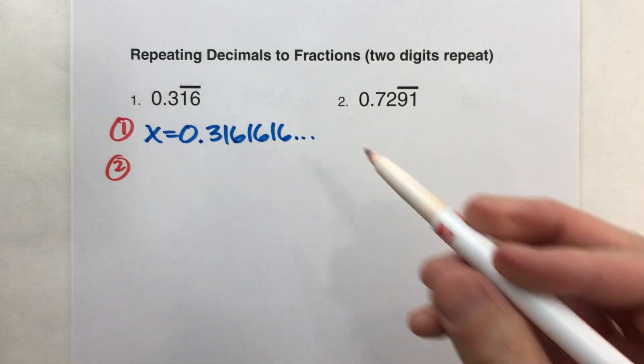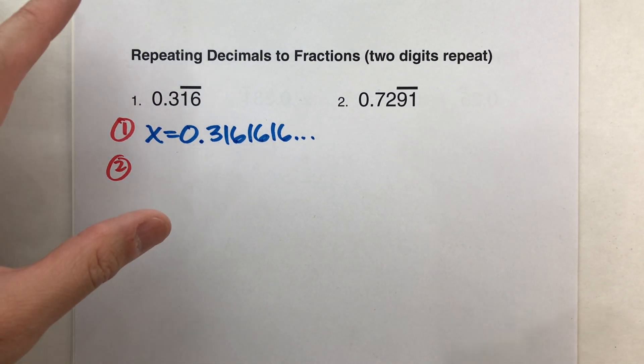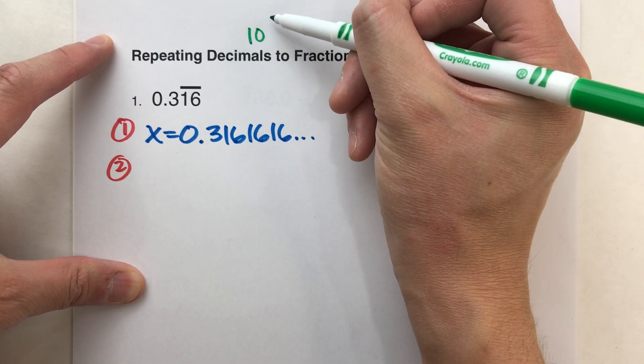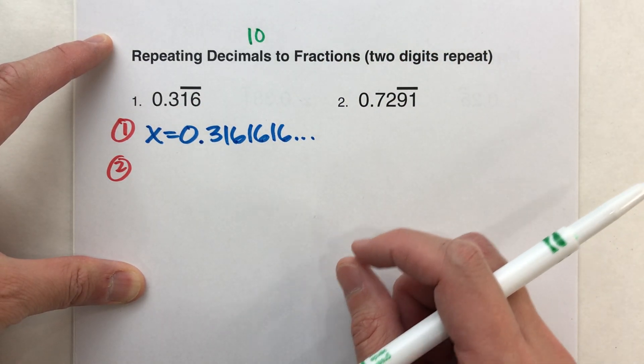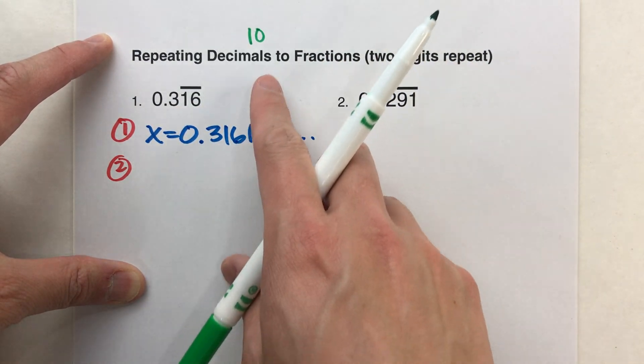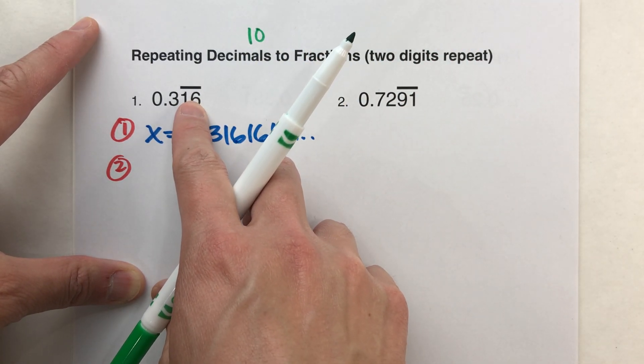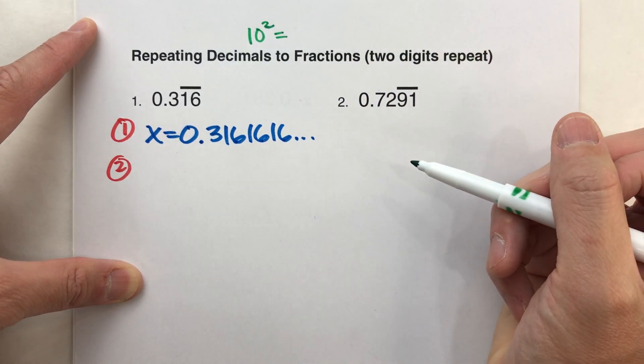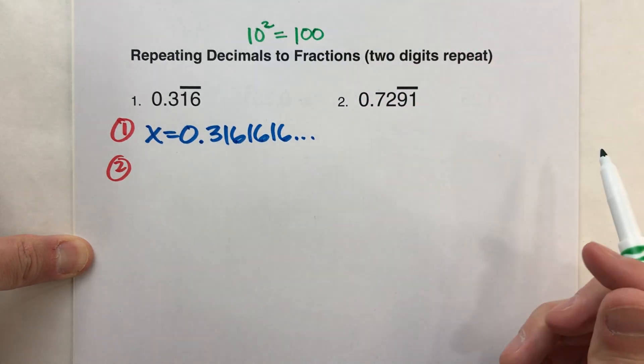Step two. We are going to make a second equation out of this by multiplying both sides by a number. What number? Well, that number is going to be determined by 10 to the power of however many digits are repeating. Now, if one digit was repeating, we'd do 10 to the first power. But in this case, we've got two digits repeating. So we have to do 10 to the second power. 10 to the second power means 10 times 10, which is 100.